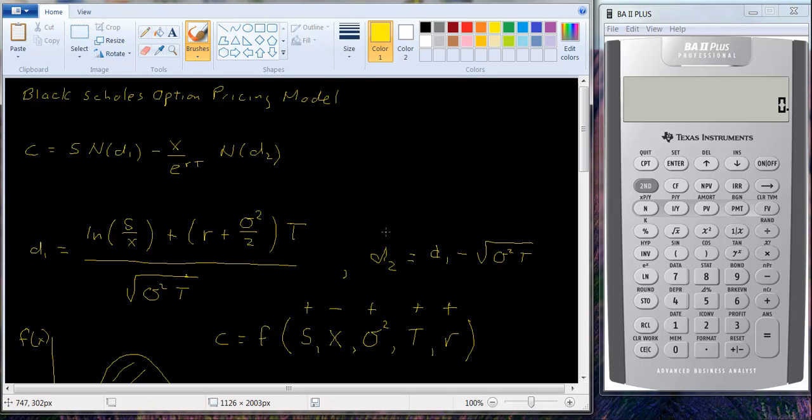So this is a pretty neat model, fairly complicated to derive when Black and Scholes did it, and Merton, but quite simple to use and quite simple to apply. And in the next tutorial, I will show you how to set up a little spreadsheet so you can actually value a call option.